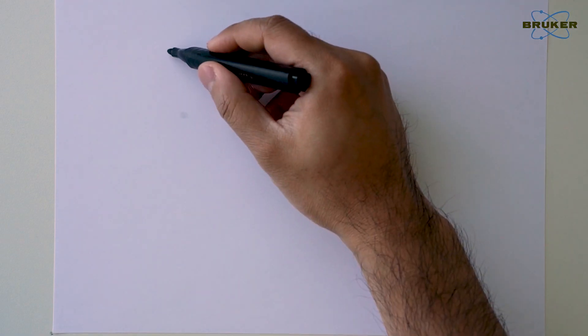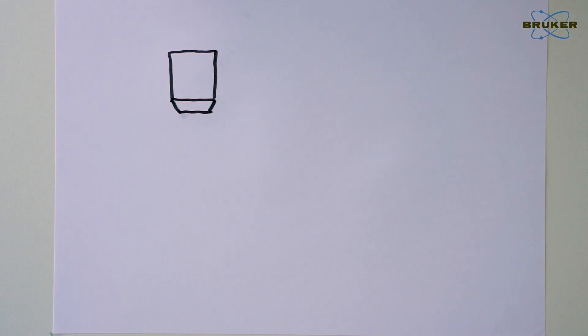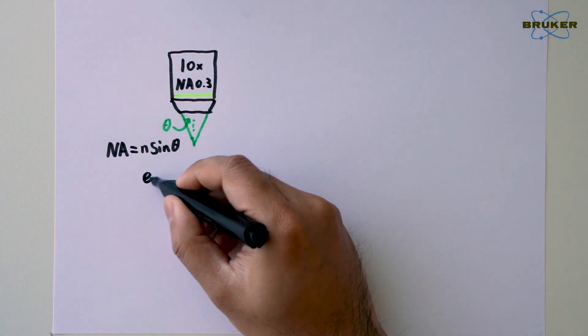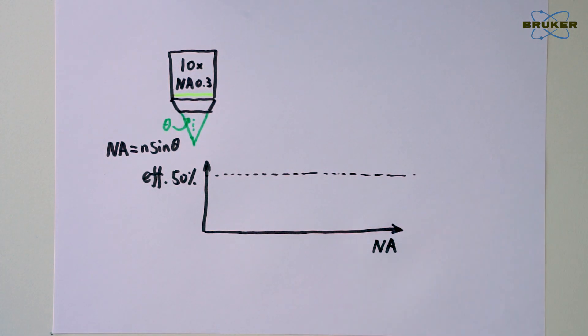In a Raman microscope, we use objective lens for this job. On an objective lens, we can see at least two numbers: magnification and numerical aperture. Numerical aperture describes the range of angles that the lens can accept. Ideally, if numerical aperture equals to 1 in air, this lens can accept 180 degrees, that is 50% of all Raman scattered light.